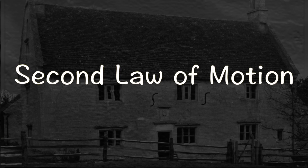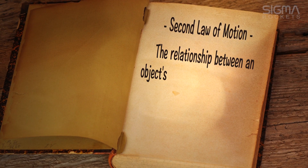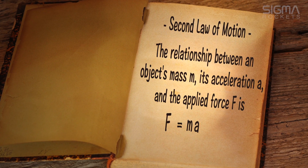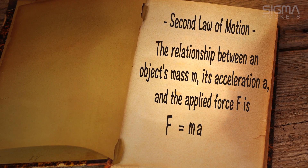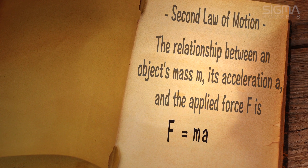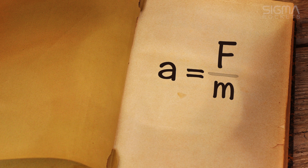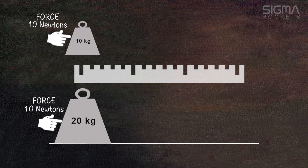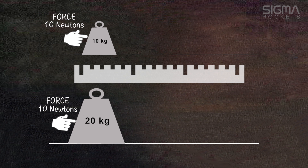Newton's second law of motion states the relationship between an object's mass m, its acceleration a, and the applied force f as: F equals ma. For our purposes we will transpose the formula to: acceleration equals force divided by mass. We will ignore friction for our examples.